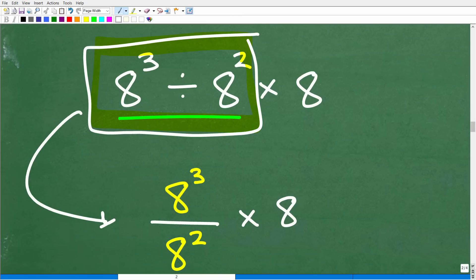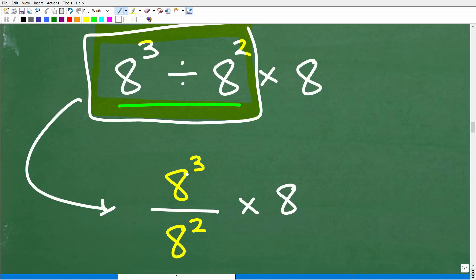So 8 cubed divided by 8 squared is the same thing as this right here. Okay, so as long as we understand that we can write 8 cubed divided by 8 squared as a fraction where 8 cubed is the numerator and 8 squared is the denominator. Well, we can write this problem in this way. 8 cubed over 8 squared times 8.